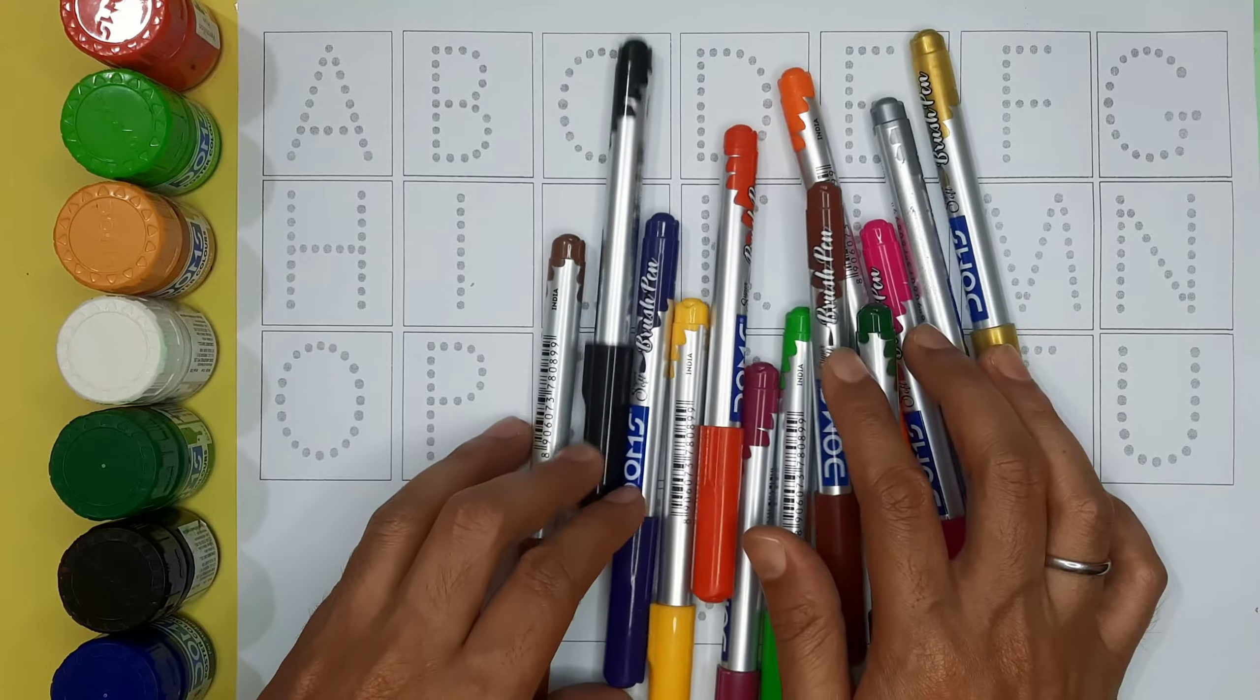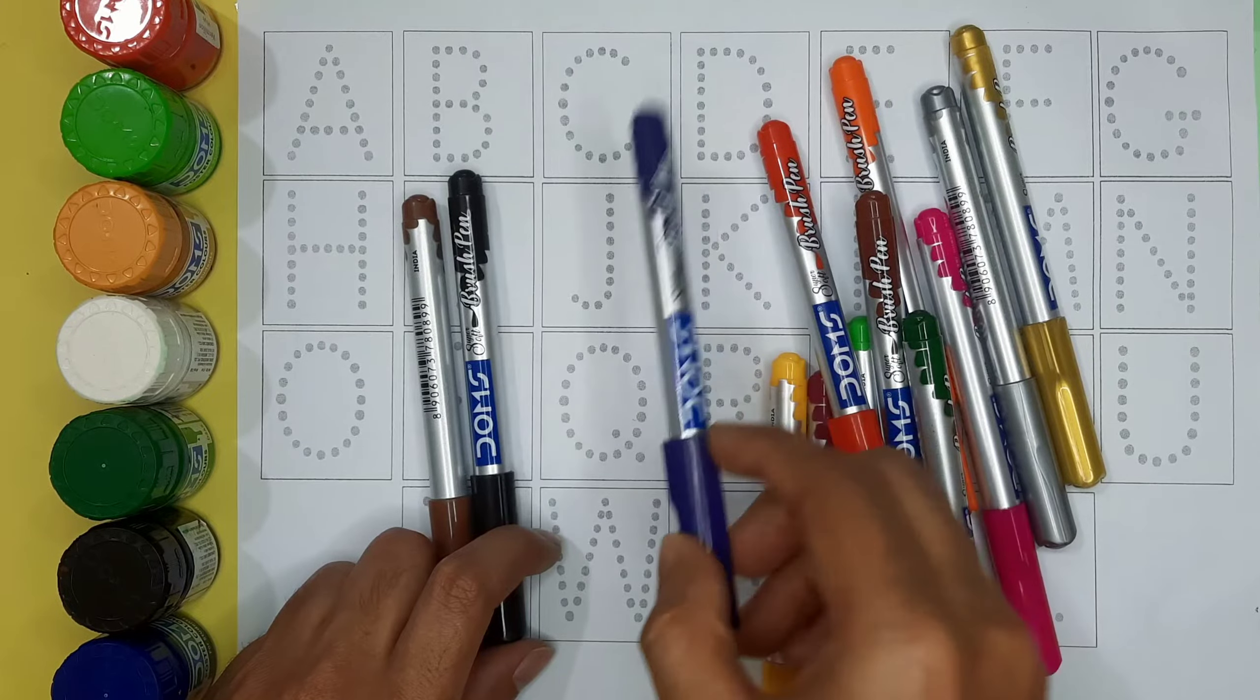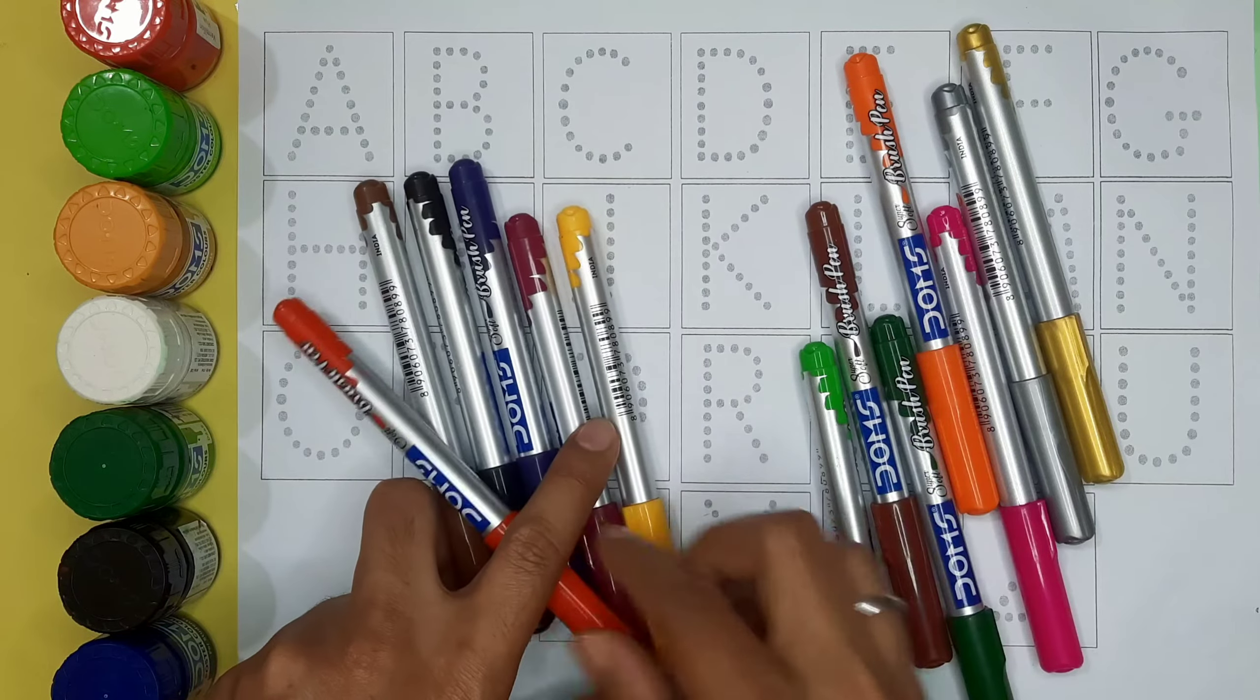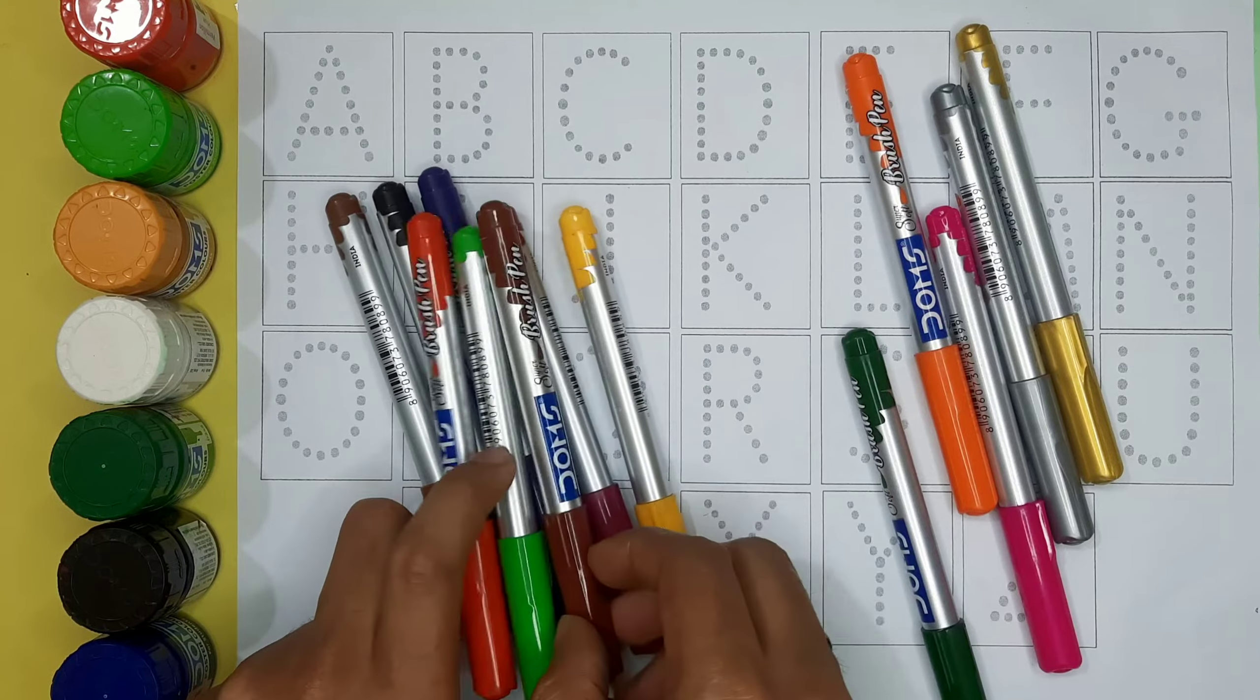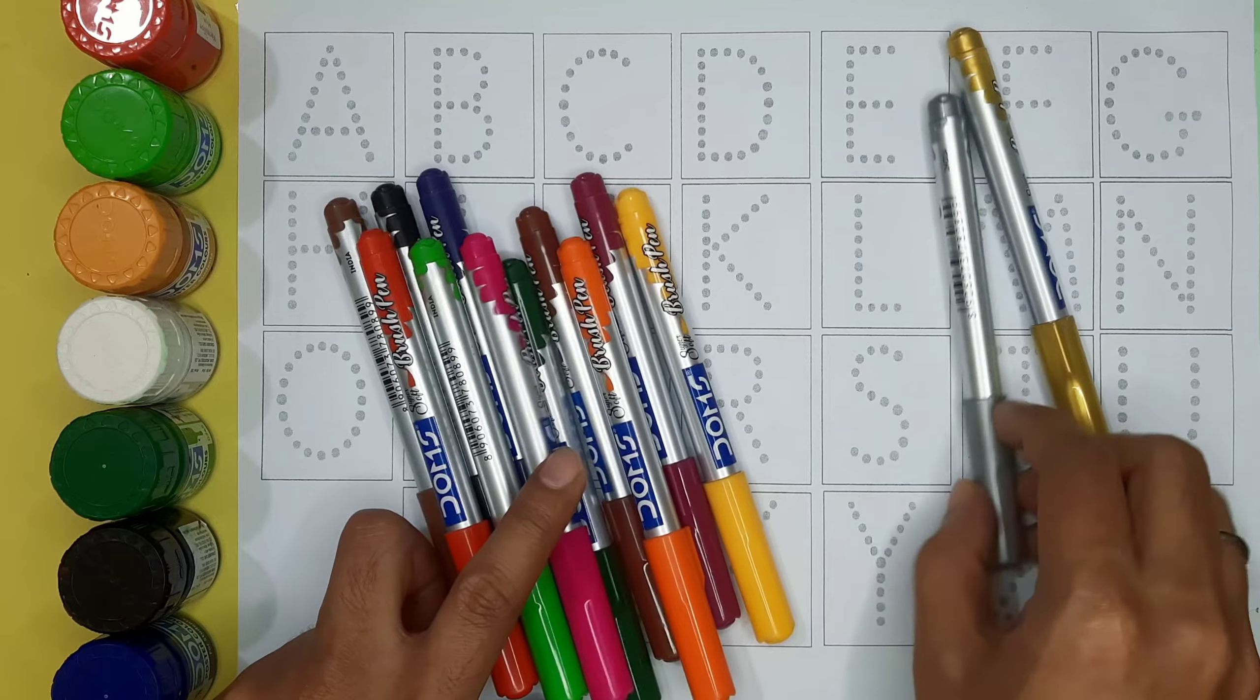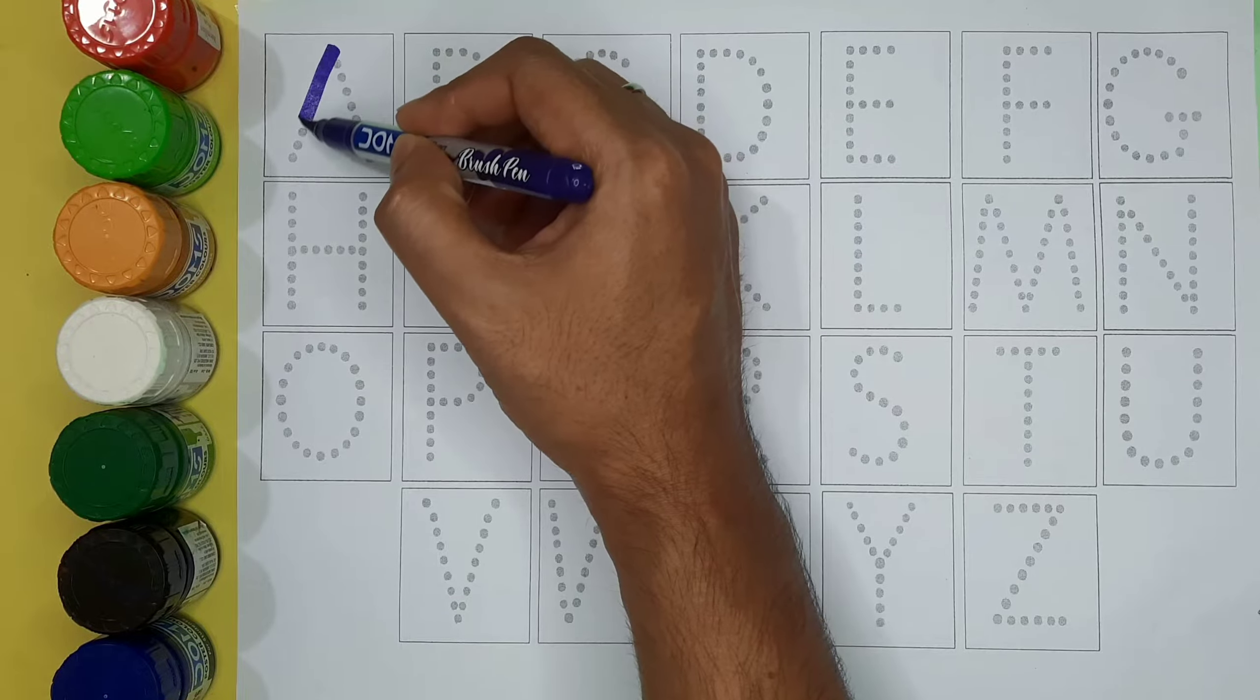Babies listen to the alphabet, choose it. Brown color, black color, violet color, yellow color, purple color, red color, light green color, brown color, green color, orange color, pink color, silver color, golden color, violet color.